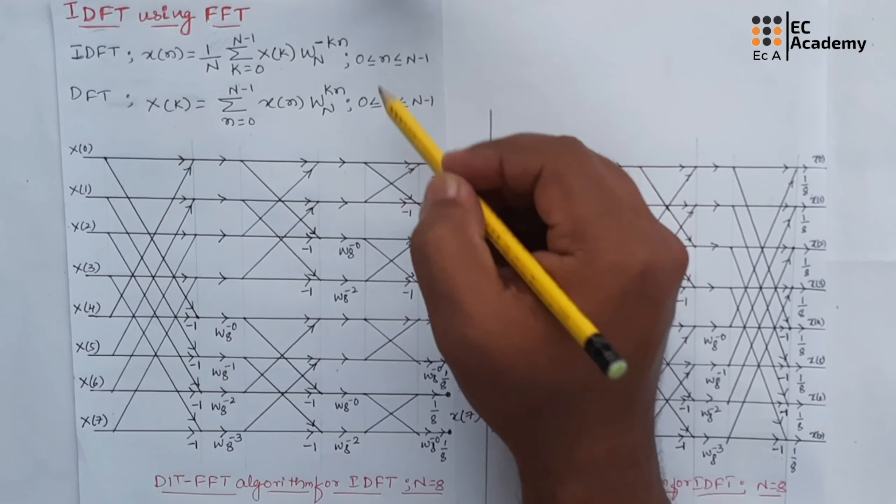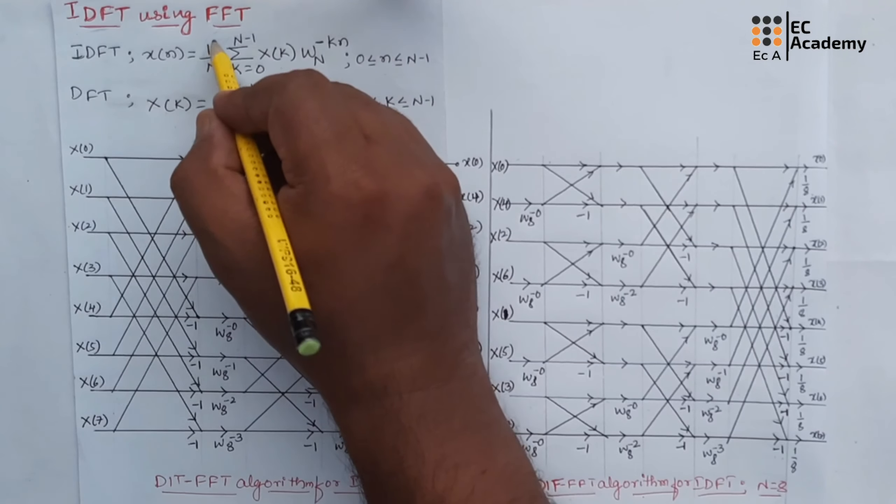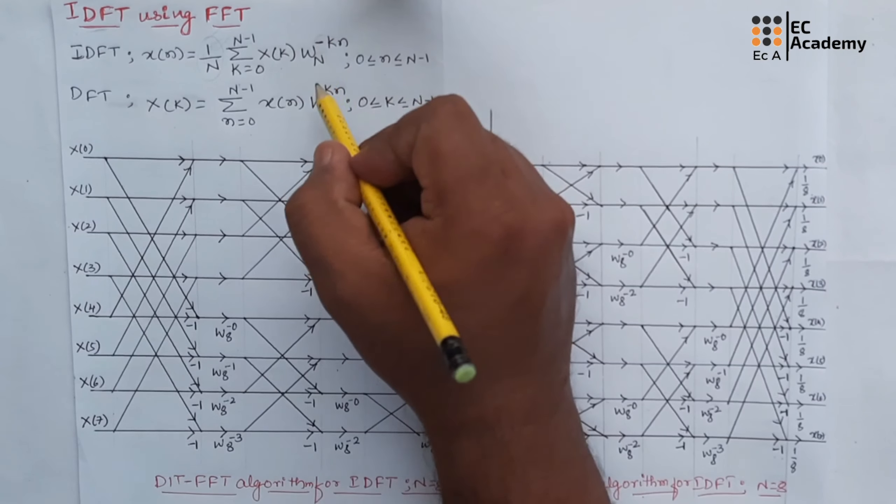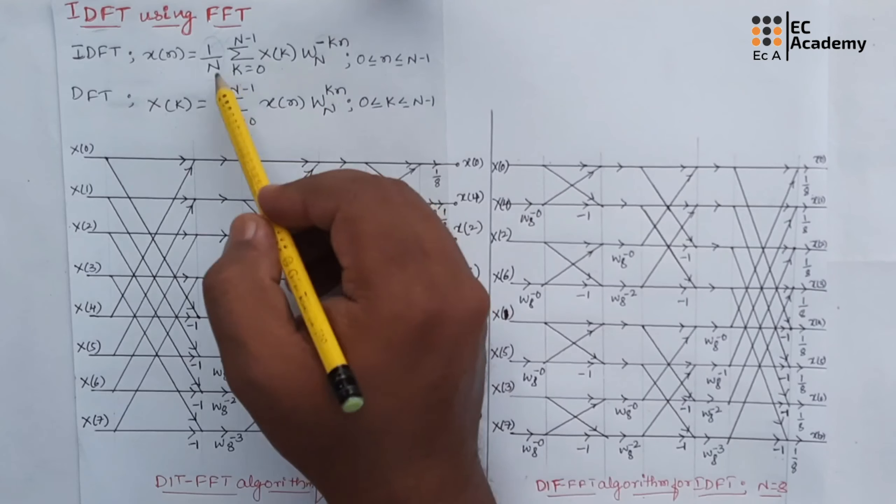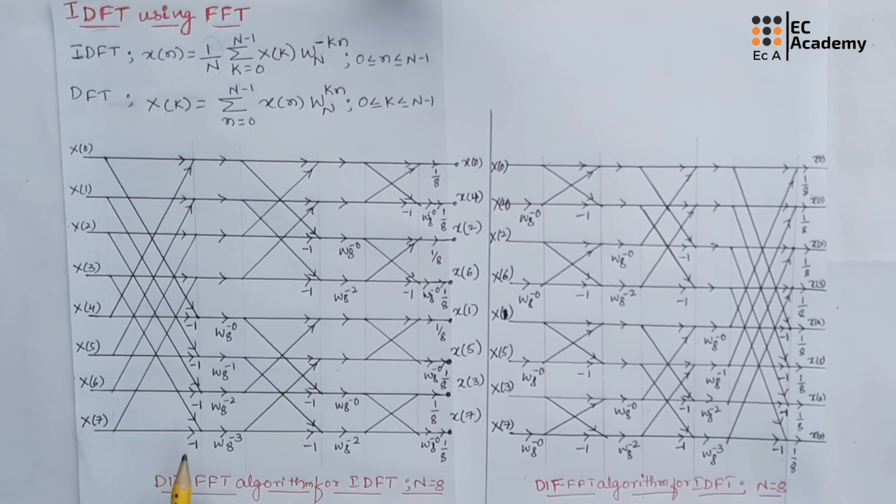If we compare these two equations, we find the only difference between them is the factor 1/N and the sign of the power of factor W_N. So these are the two major differences between these two equations.